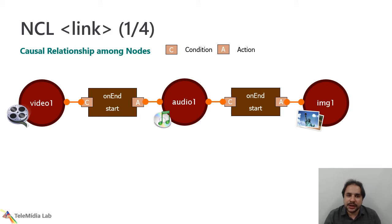Now, we'll take a little bit about the link. Link consists in a causal relationship among nodes. What does this mean? It means that it will be a set of conditions over nodes and a set of actions over nodes. And when the conditions are satisfied, the set of actions should be applied. Here, we have a simple example of a sequence of video, audio and an image. That uses two NCL links. The first link consists of an on-end start. It means that when the video ends, a specific audio will begin. The second link defines the same behavior. When the audio ends, an image will start.